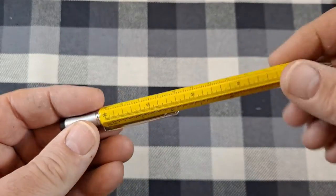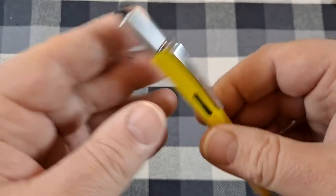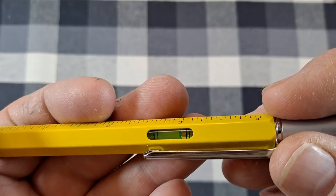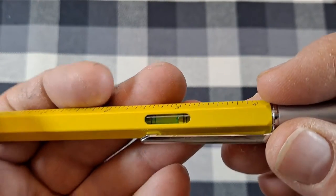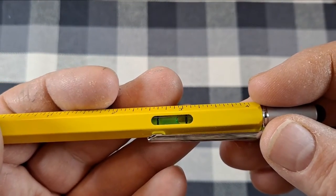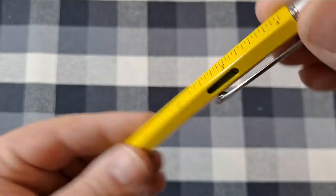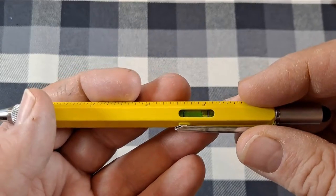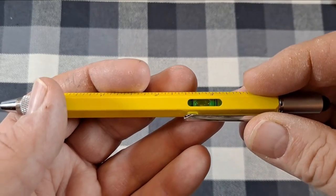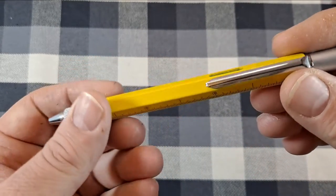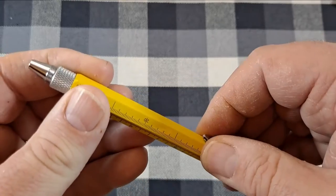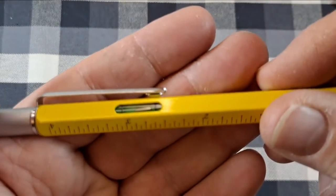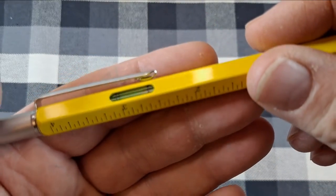But has a little bubble level, horizontal. You obviously can't do vertical, you know check for plumb or anything, but for level you can. That might come in handy. Pocket clip, it's got good retention.